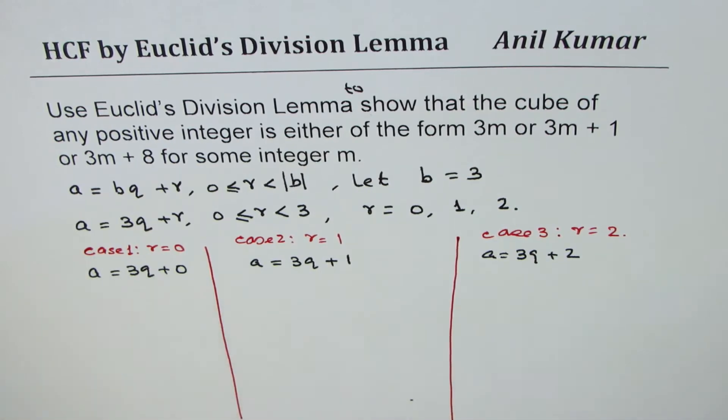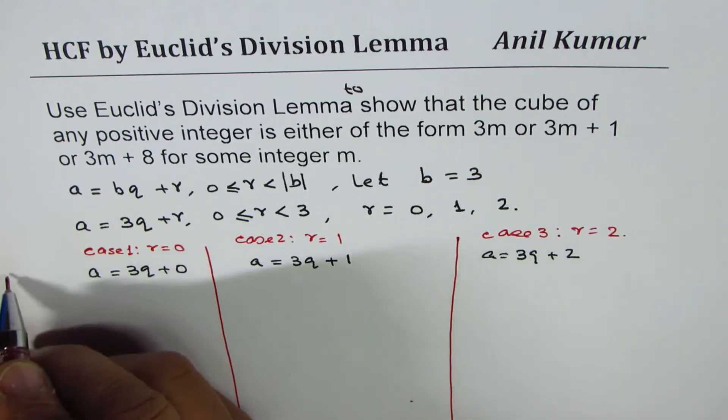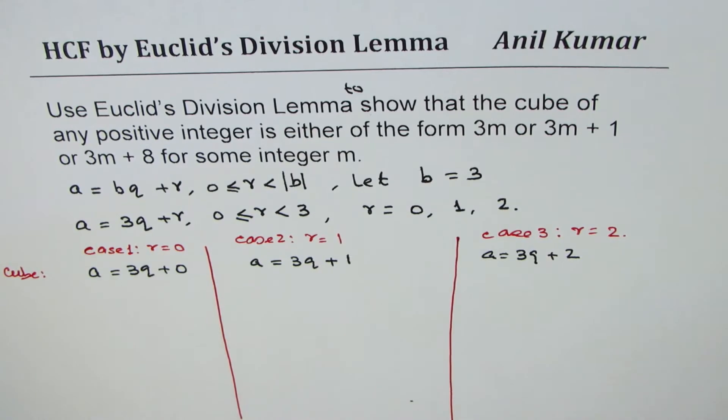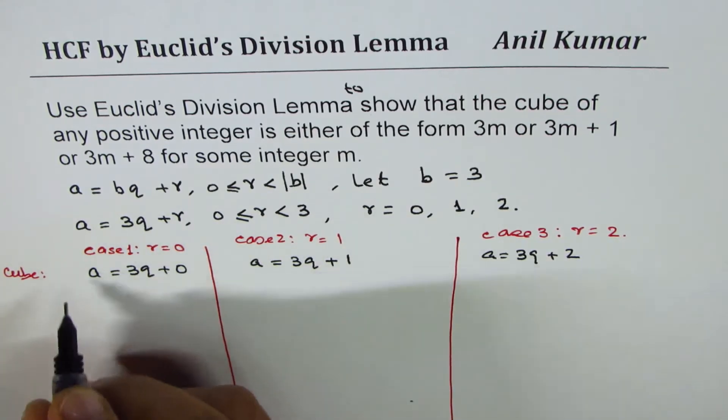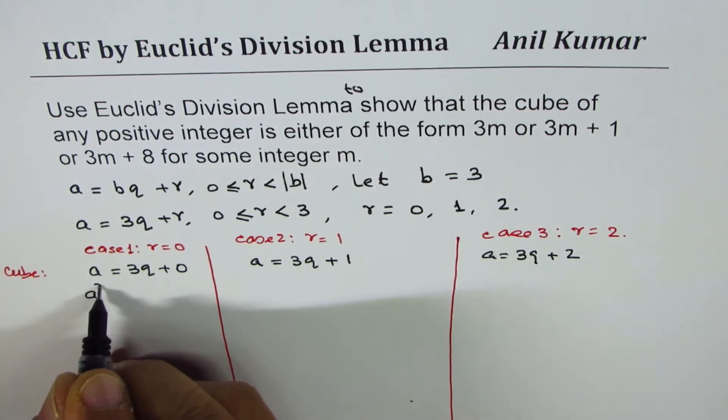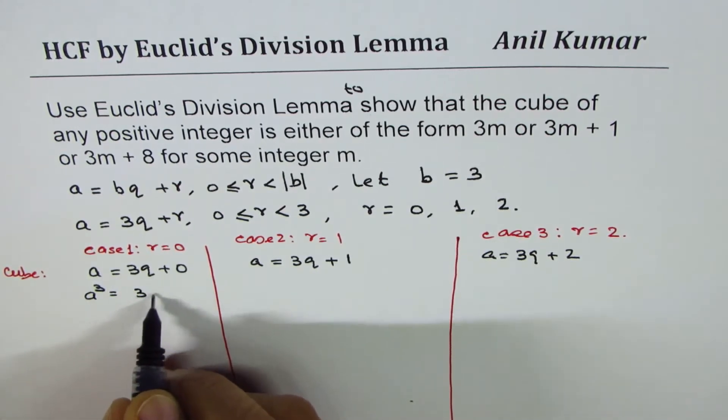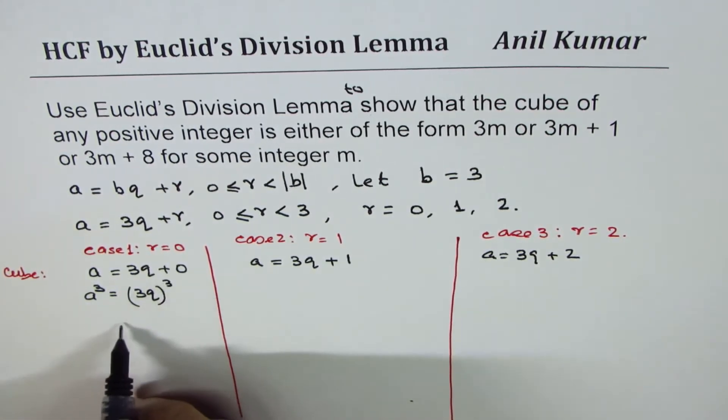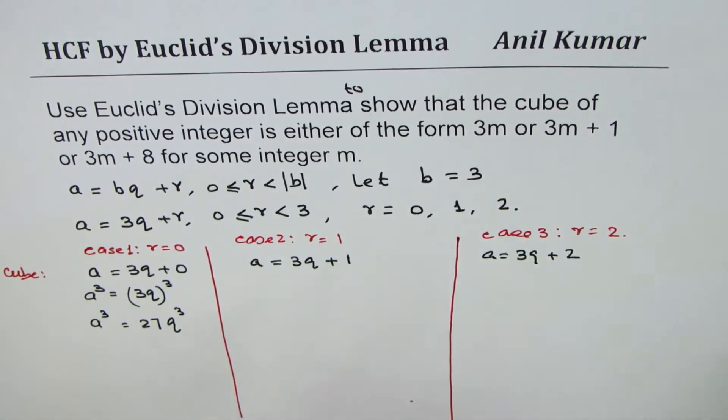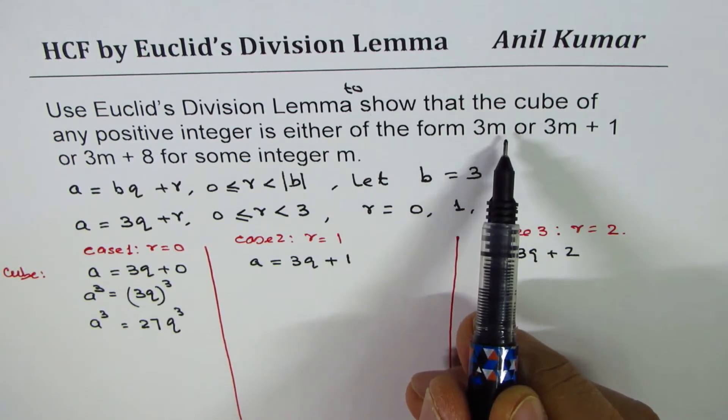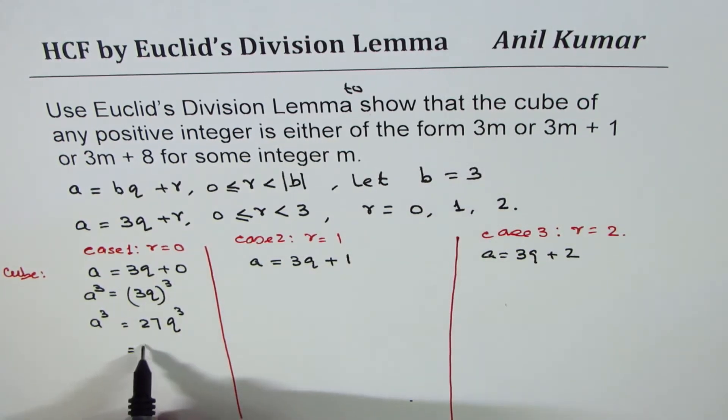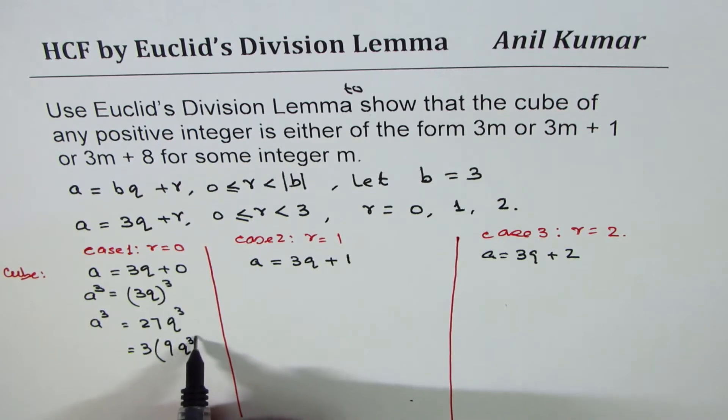If I do cube on both sides, so now we'll do cube all sides for all. A cube is equals to 3Q whole cube, which is 27Q cube. Since we want to prove 3 times any other integer, I will take 3 common. 27 divided by 3 is 9, so we get 9Q cube.